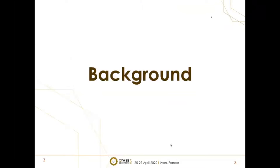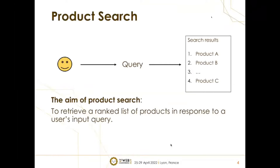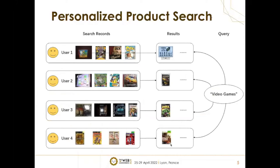Let's come to the first part. Our work focuses on the field of product search, which aims to retrieve a ranked list of products in response to a user's input query. If a user inputs a query to search for some products, the search engine returns a list of products in a certain order. But different users have different preferences and interests, so the search results should be customized. For example, there are four users shown on the screen who focus on games on different platforms, such as Mac OS, Windows OS, PlayStation, and Xbox. Even if they input the same query 'video games,' the returned results should focus on different platforms.